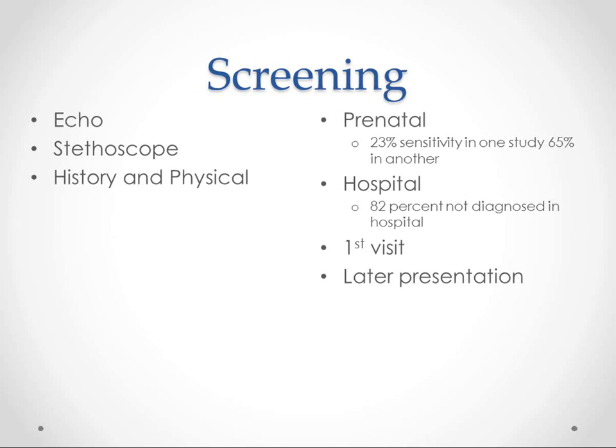Of course, the degree or severity of the disease is going to be a big factor in how quickly we pick it up, but obviously the earlier the better. The screening tools are echo, stethoscope, history, and physical — probably in reverse order. The history and physical is going to tell us a lot. Then we're going to use a stethoscope and probably pick up a lot of these murmurs, and then if we suspect something, we'll use the echo.